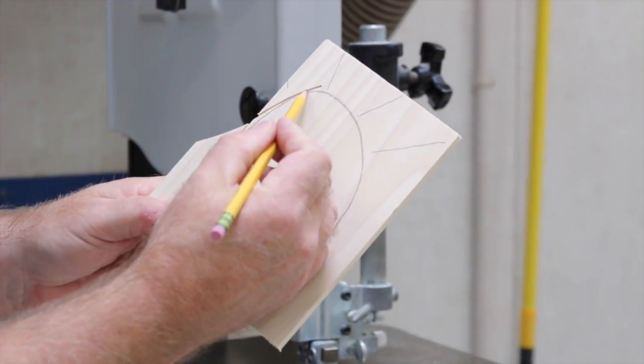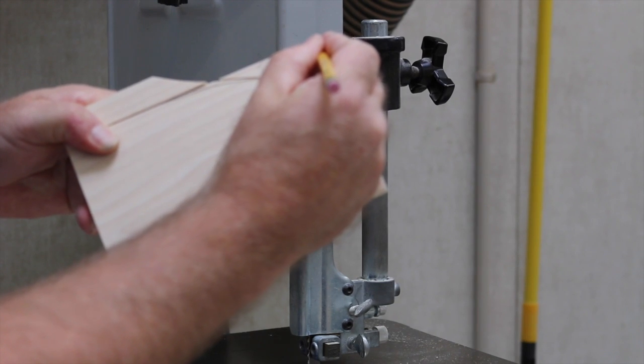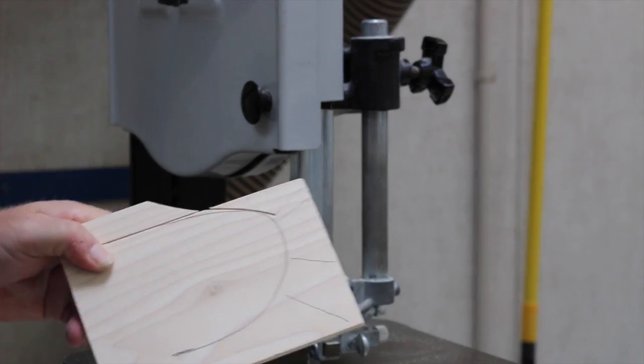Now you can see here that the curve is way too sharp to make the cut on the bandsaw, so I'll make a relief cut right about here and I'll cut this piece off.